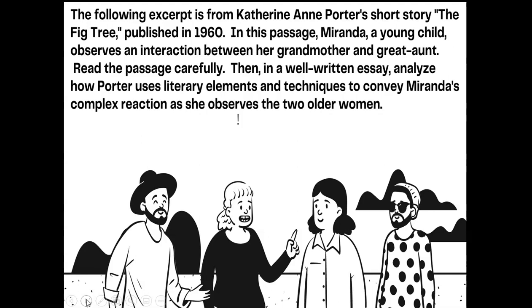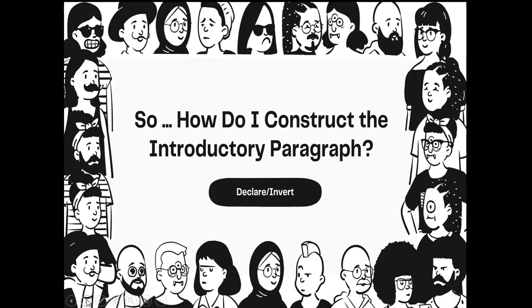Here's the prompt: the following excerpt is from Katherine Anne Porter's short story 'The Fig Tree,' published in 1960. In this passage, Miranda, a young child, observes an interaction between her grandmother and great-aunt. Read the passage carefully, then in a well-written essay, analyze how Porter uses literary elements and techniques to convey Miranda's complex reaction as she observes the two older women. I gave this to my students blind — they can't take me to the exam, although they wish they could.